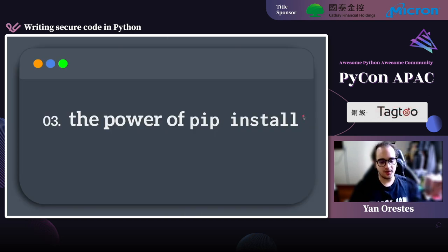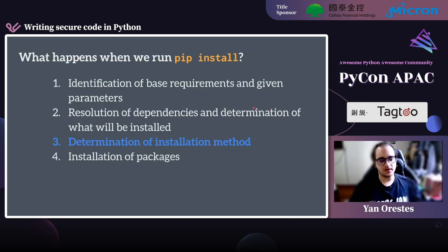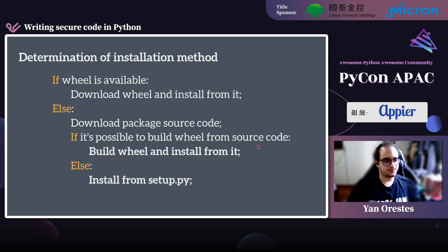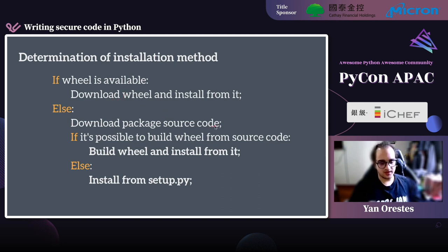The third topic is the power of pip install. When we run pip install, I divided the process into four steps: identification of base requirements and given parameters; resolution of dependencies; determination of installation method; and installation of packages. We're focusing on the third step. Basically, pip checks if there's a wheel available — if so, it downloads and installs from it. If not, it downloads the source code. If a wheel can be built from source, it does that; otherwise it installs from setup.py.